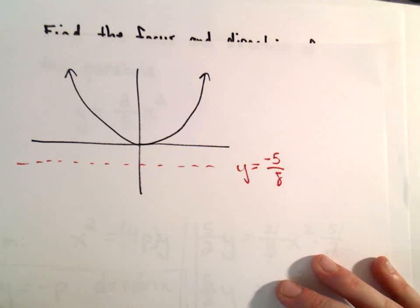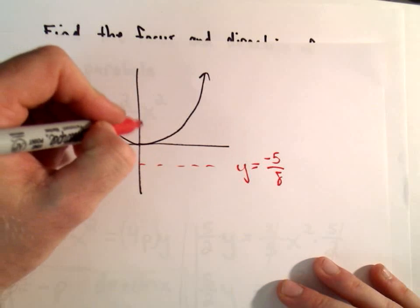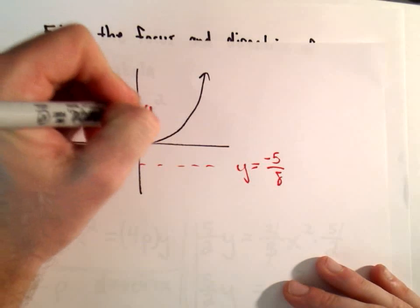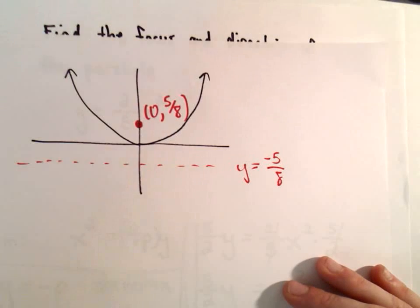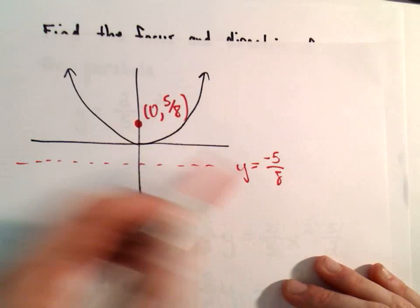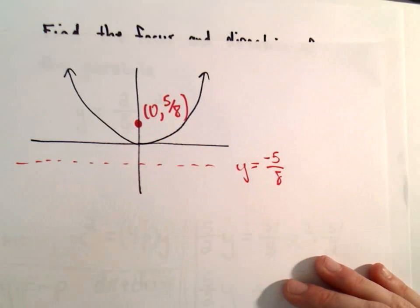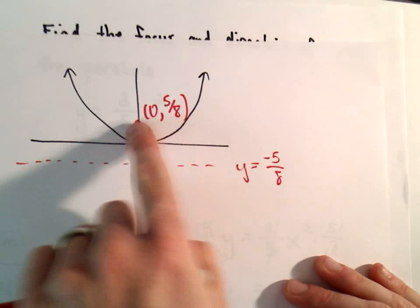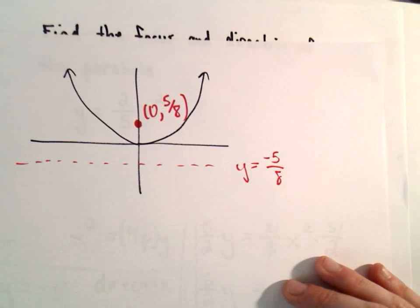And that certainly seems reasonable. And it says our focus here was at the point 0, 5 eighths, which also seems reasonable. This would be kind of a quick way for me intuitively just to make sure that I didn't make maybe a sign mistake or maybe I didn't switch the coordinates out incorrectly, just little things like that.